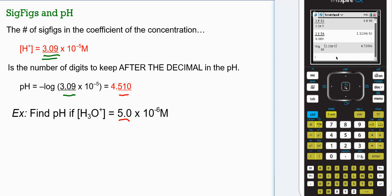We're going to go negative, log. We're going to tab past the base and go straight to the main number. 5.0, double E, negative 6. The parentheses are already closed for you. And my pH value is going to be 5.30.